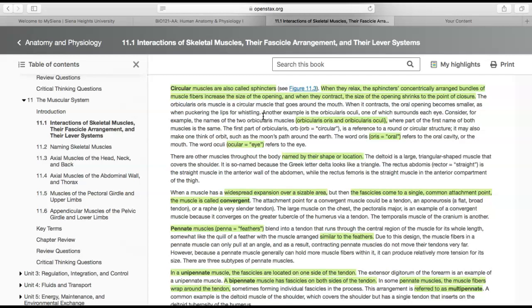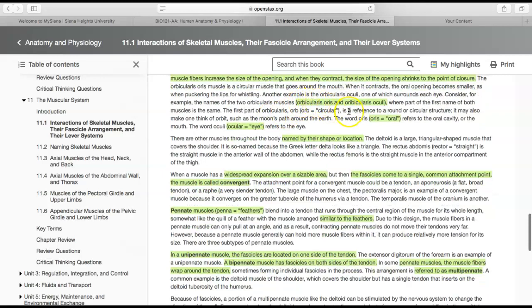Another example is the orbicularis oculi—you have two and one surrounds each eye. If you look at the names orbicularis oris and orbicularis oculi, you can see the first part of the name is the same. If you break it down, the first part orbicularis comes from orb, which is circular. Oris relates to oral, and ocular is eye.